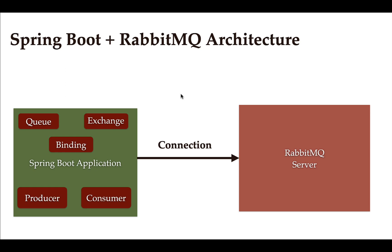Welcome back. In the previous lecture we configured RabbitMQ queue, exchange, and binding in our Spring Boot application. In this lecture we will create a producer, and then in the next lecture we will create a REST API which will send a message to the producer, and the producer will send that message to the RabbitMQ server.